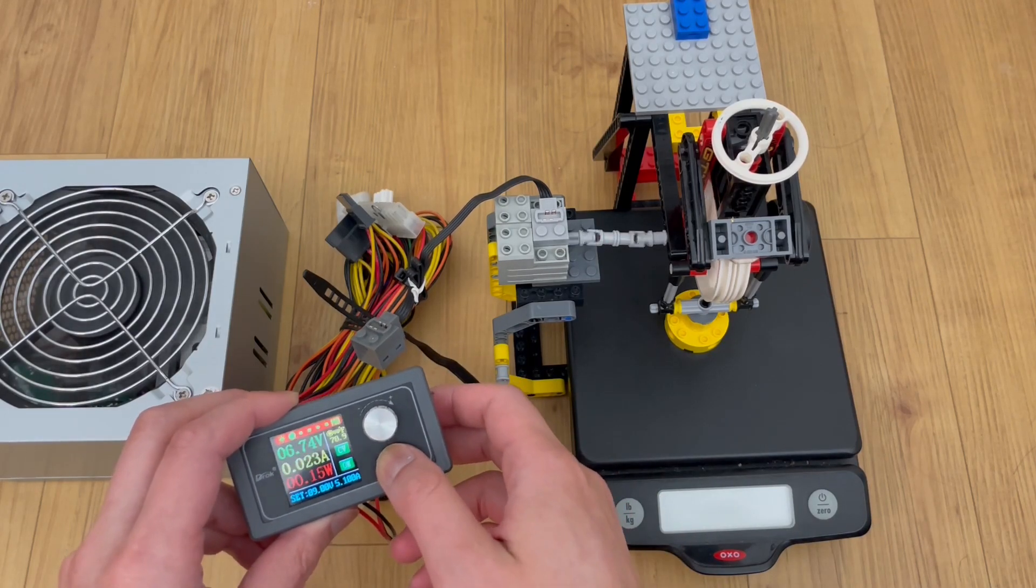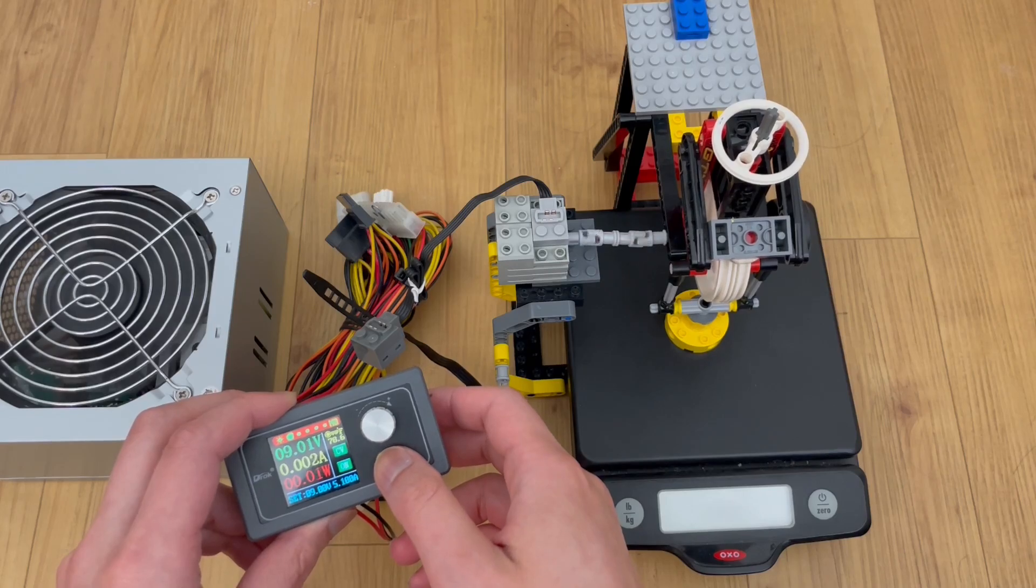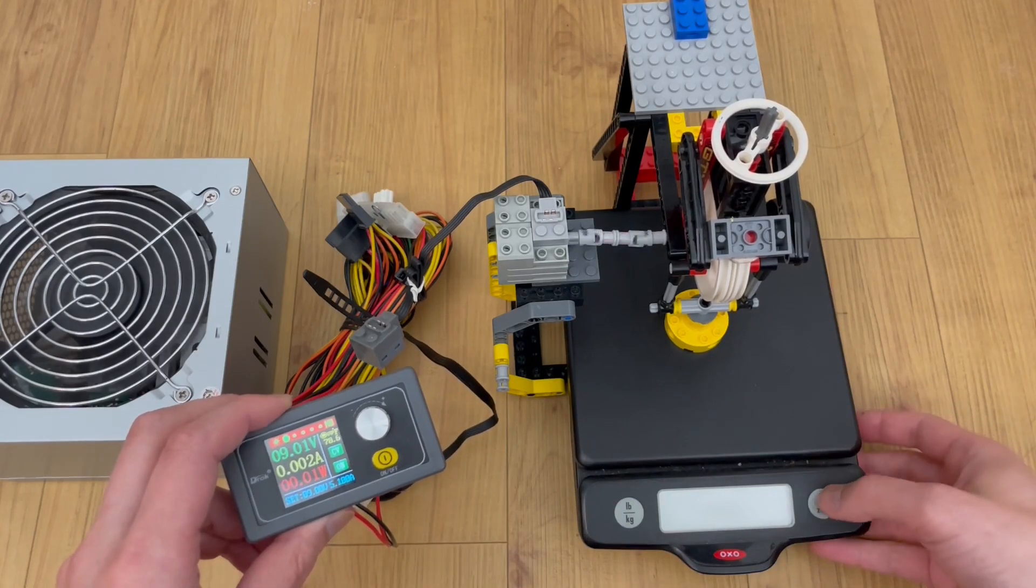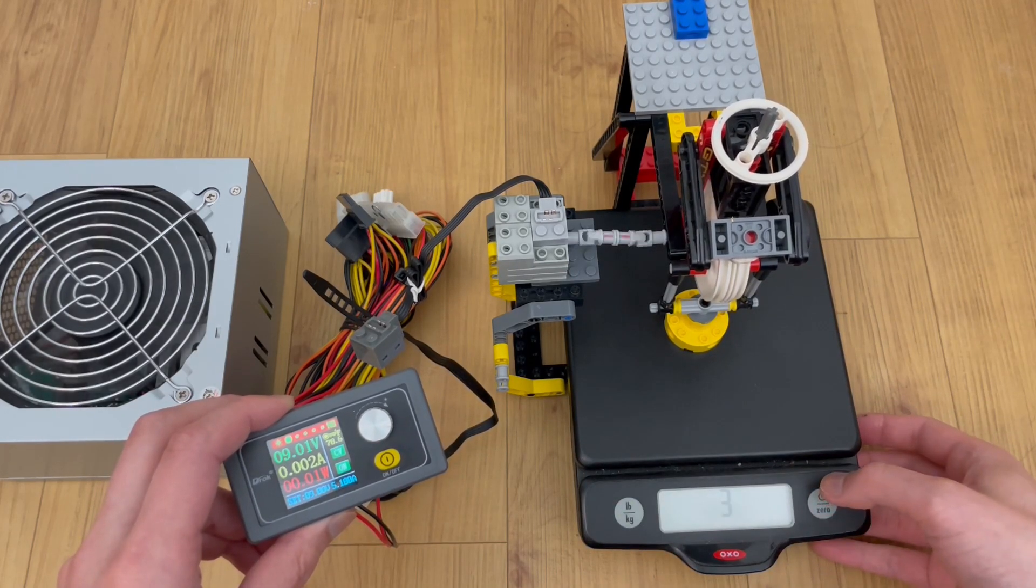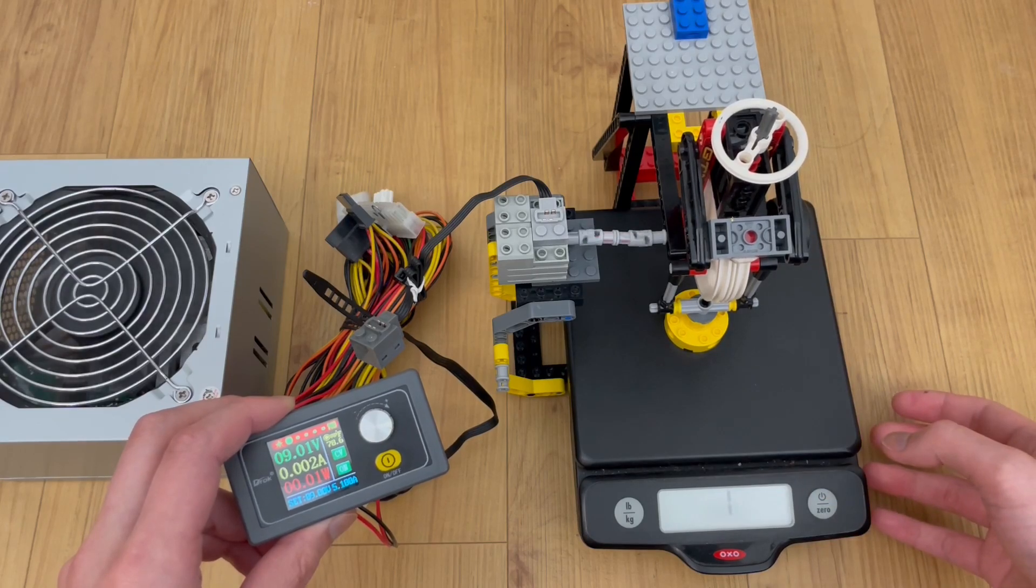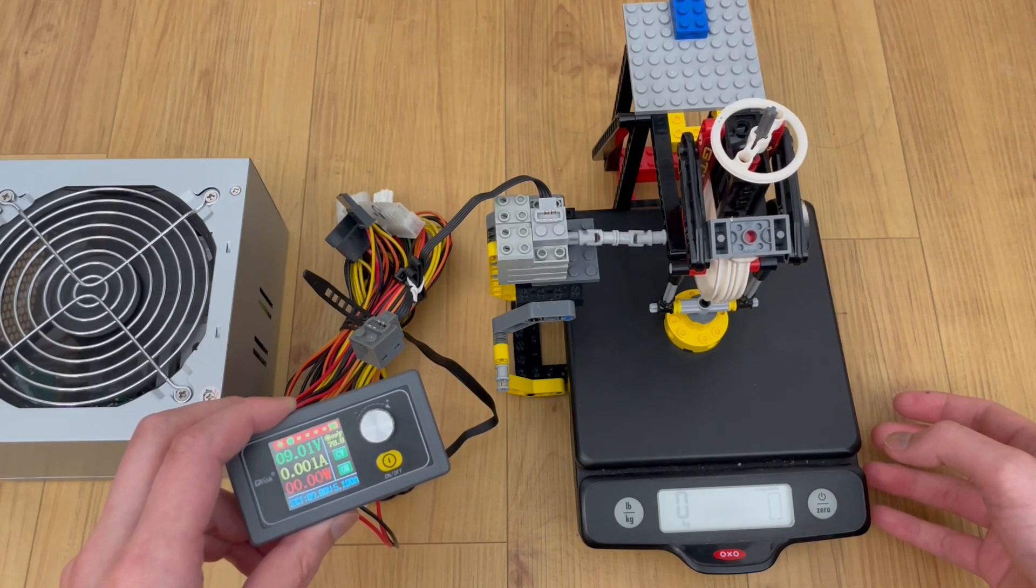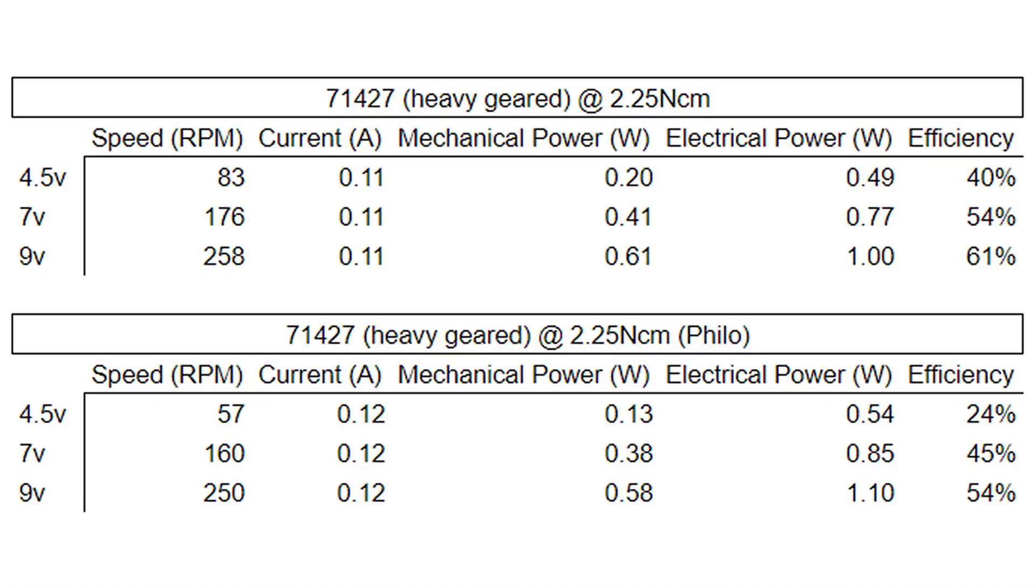For example, we can run the 74127 geared motor at exactly 2.25 newton centimeters, 143 grams on the scale, and measure or derive the same values.